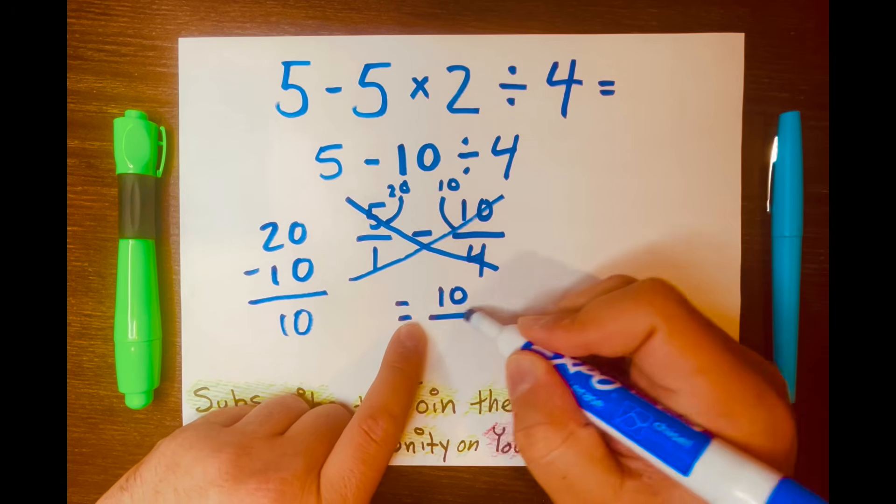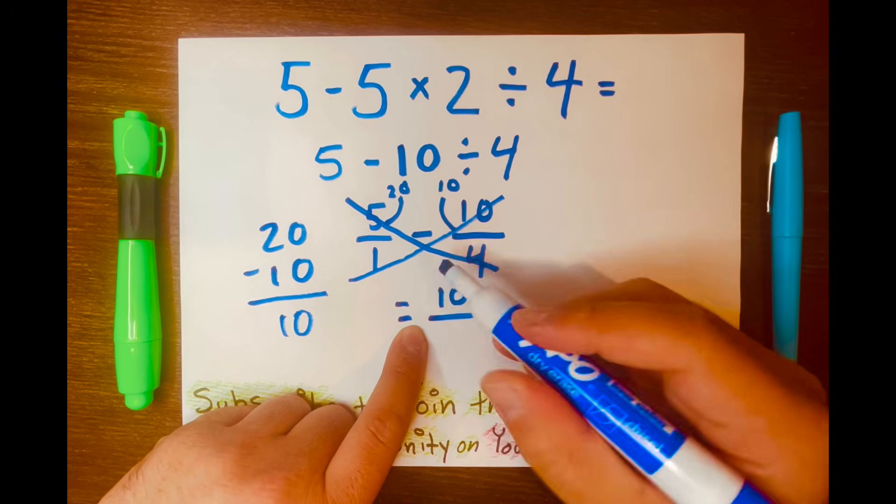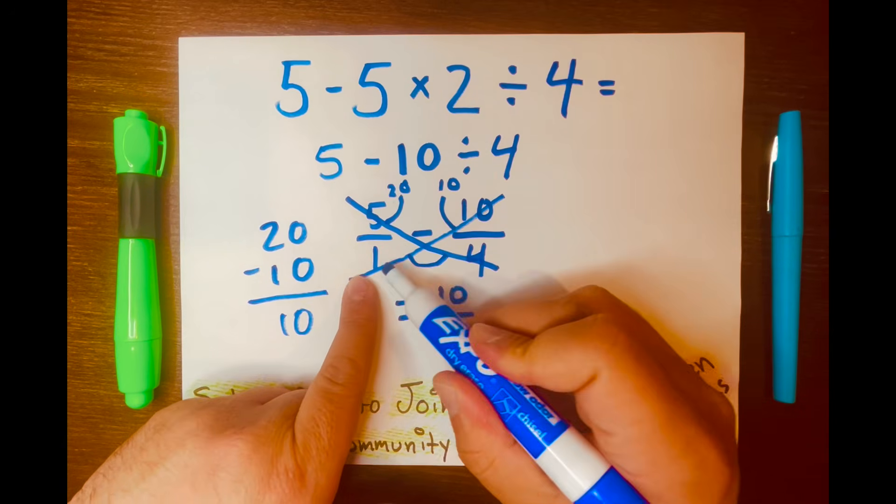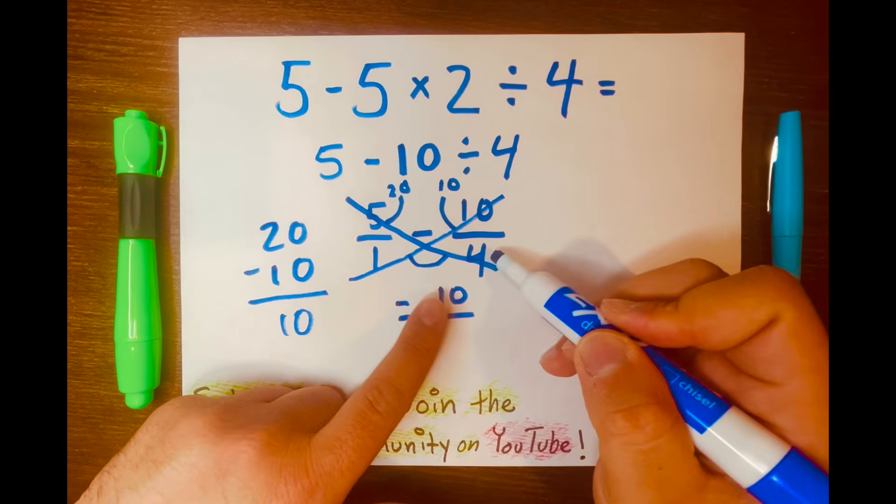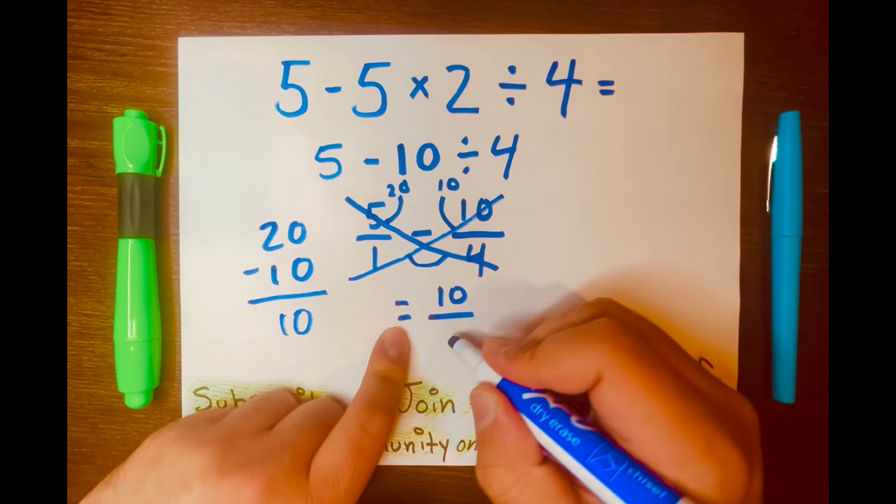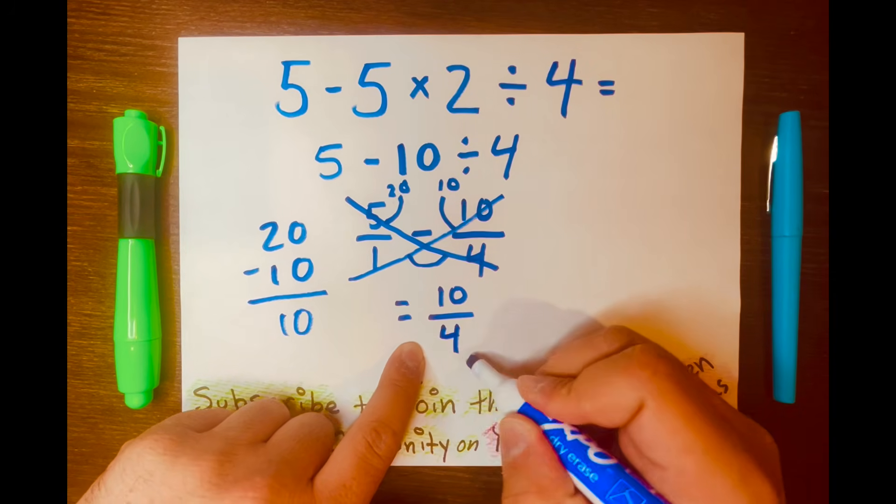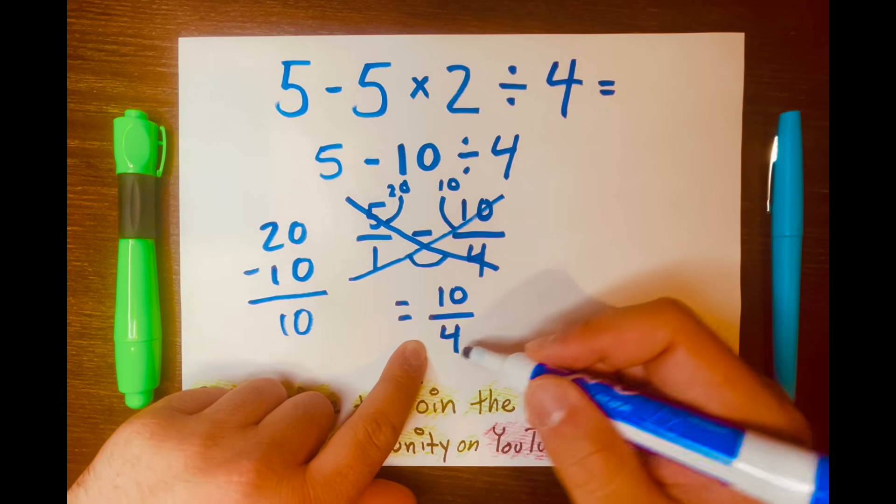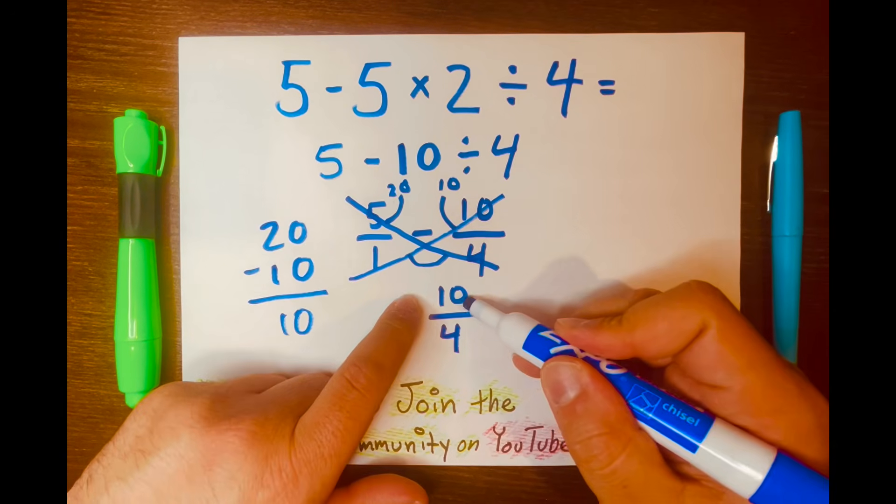And then we have to make the body. That's the body. And we multiply 1 times 4 or 4 times 1 equals 4. And that will go down here below the fraction bar. That is called the denominator. And so now we have 10 over 4.